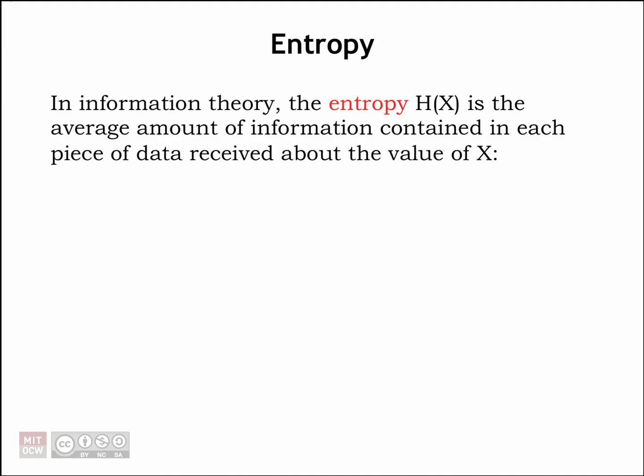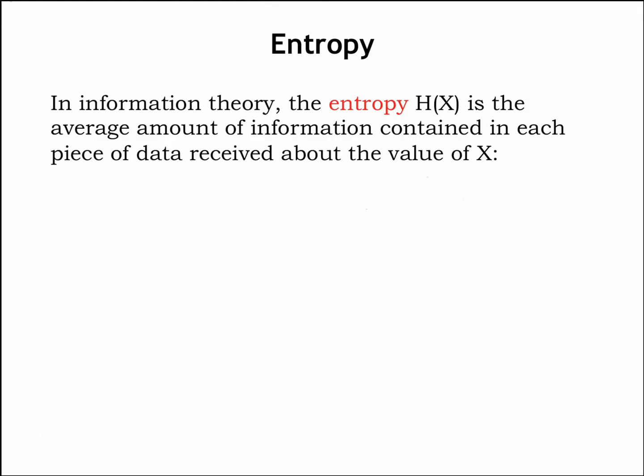The entropy of a random variable is the average amount of information received when learning the value of the random variable. The mathematician's name for average is the expected value — that's what the capital E means. We compute the average in the obvious way: we take the weighted sum where the amount of information received when learning of a particular choice i is weighted by the probability of that choice actually happening.